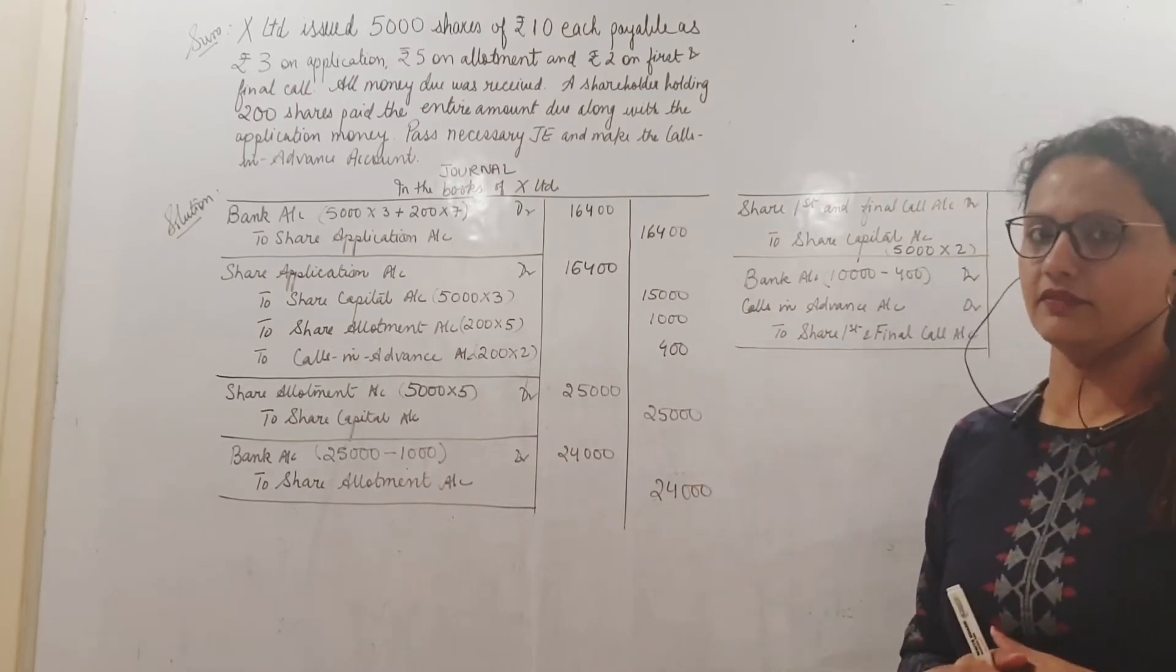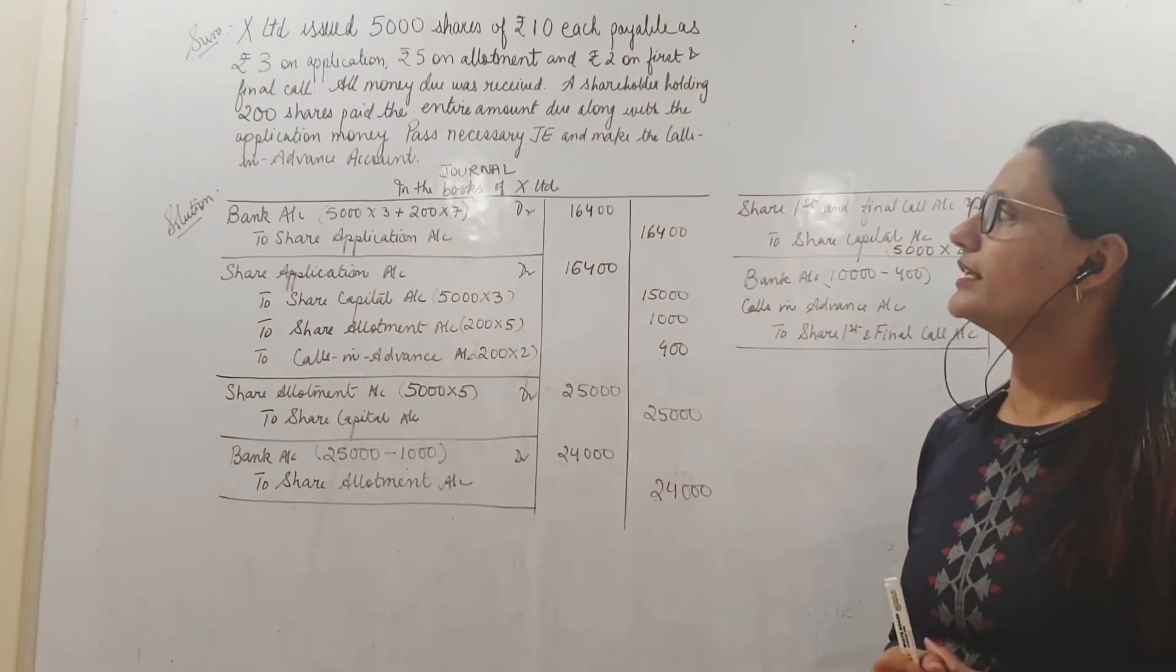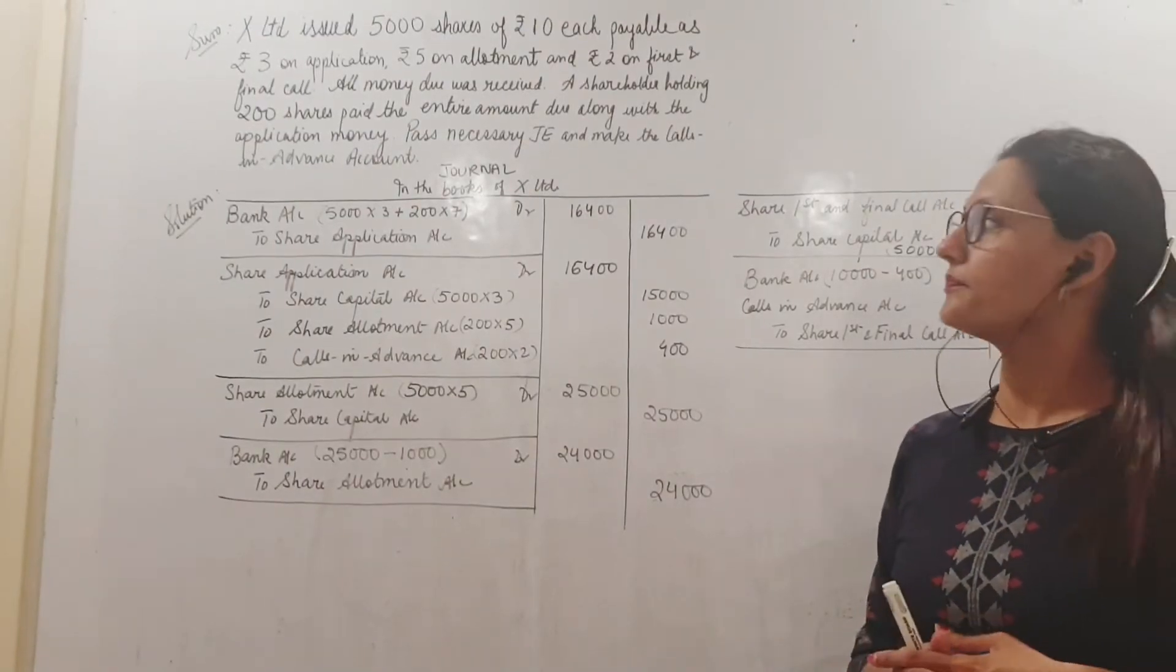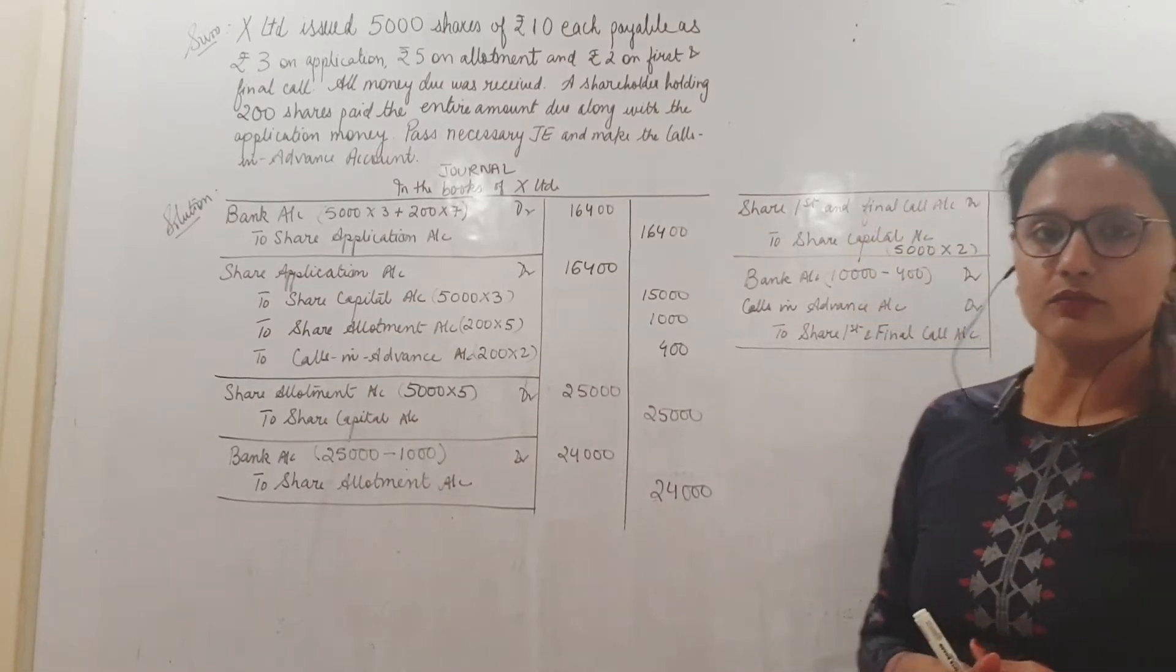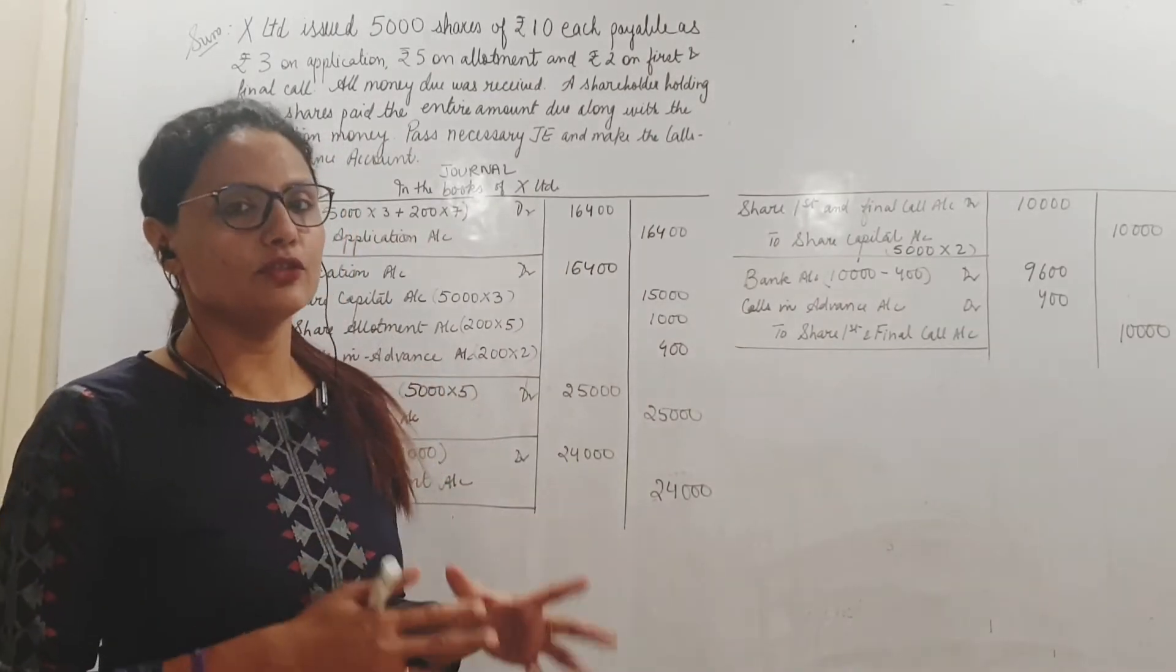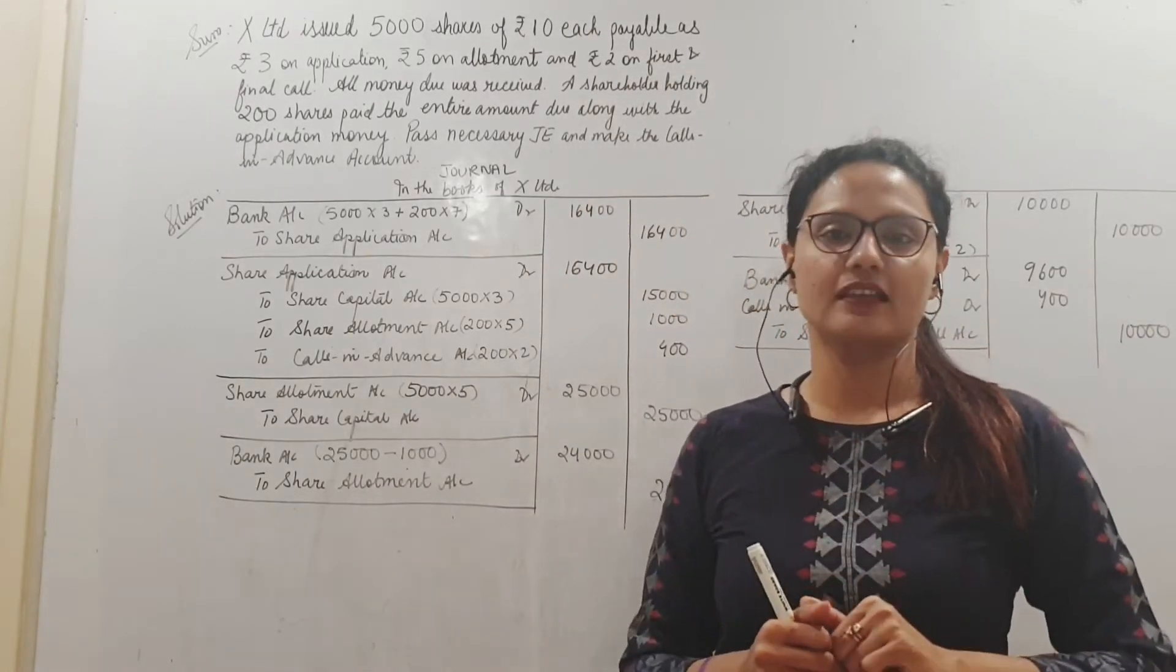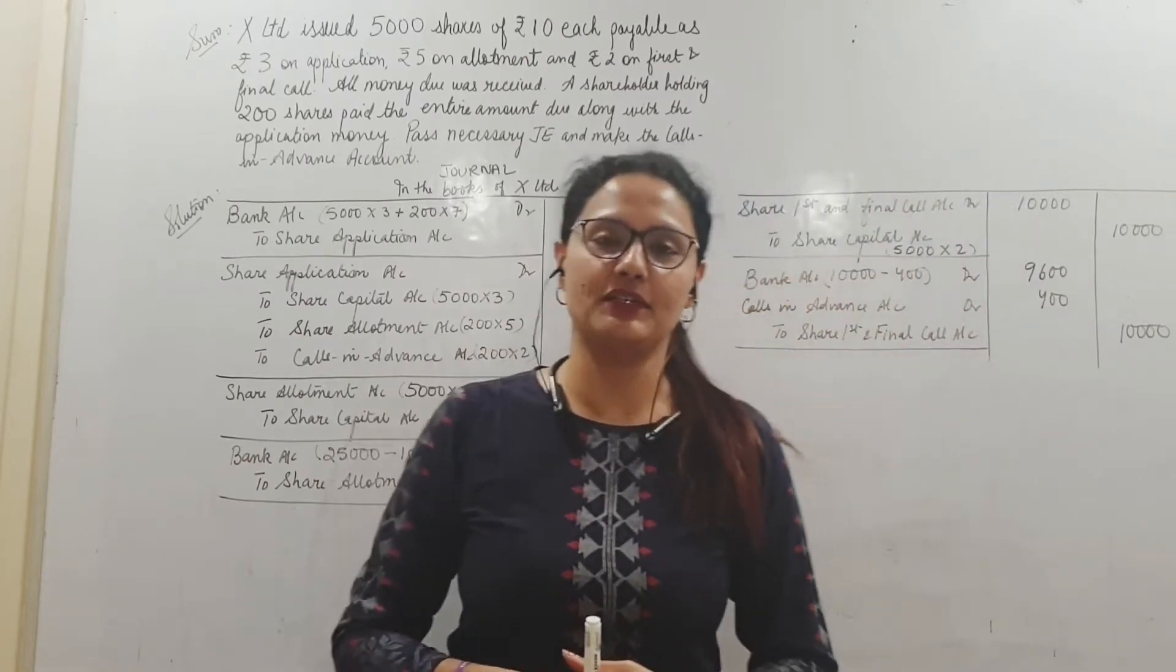All money due was received. That means there were no calls in arrear. A shareholder holding 200 shares paid the entire amount due along with the application money itself. Prepare the journal entry and make the calls in advance account. Now here, one shareholder who was holding 200 shares could not wait till the company calls and asks you to pay. He has paid the entire amount in advance.